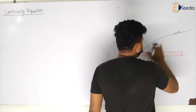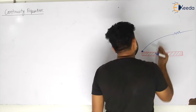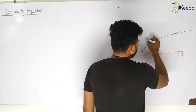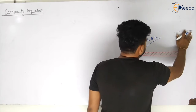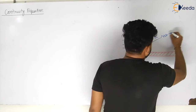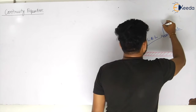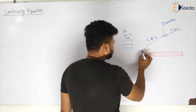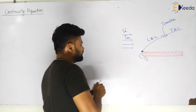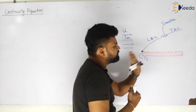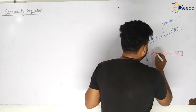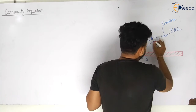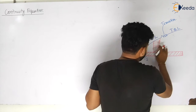Now if you look inside this boundary layer, you have seen the velocity profile. What I will consider is: first there is a laminar boundary layer, then transition is occurring, then a turbulent boundary layer. If the surface temperature is Ts, there will be velocity gradients inside the boundary layer — the velocity will change.